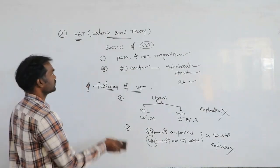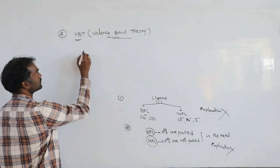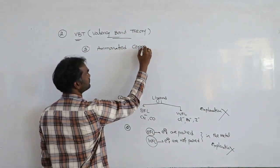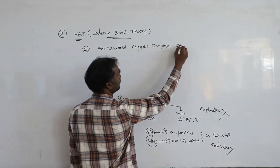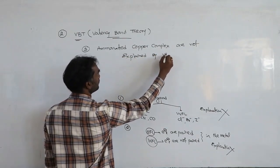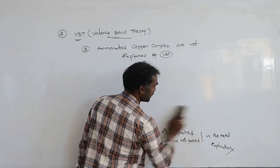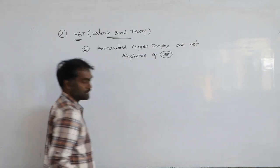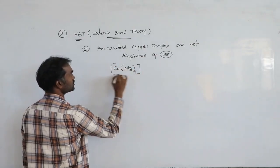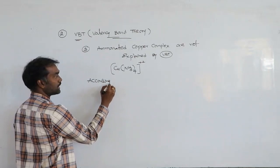One more important failure: ammoniated copper complexes are not explained by VBT. This is the third failure. Let us take the example Cu(NH₃)₄²⁺ and see what happens according to VBT.